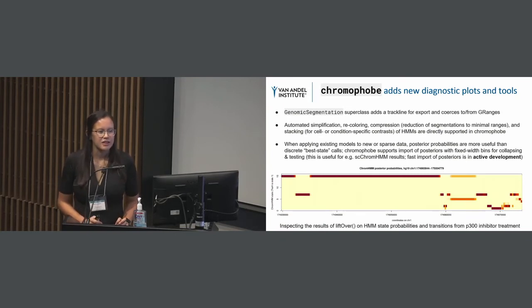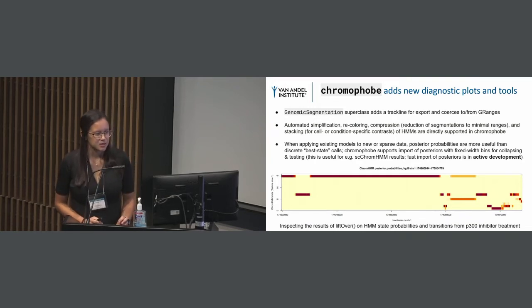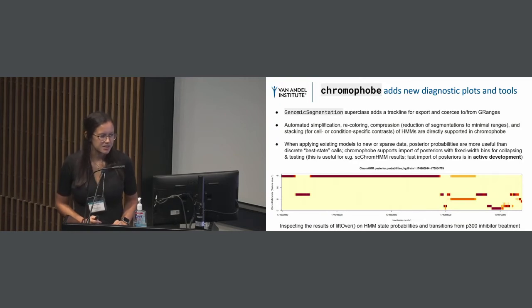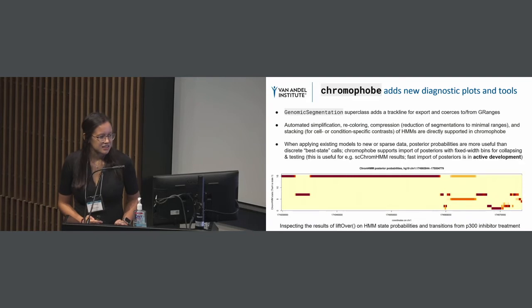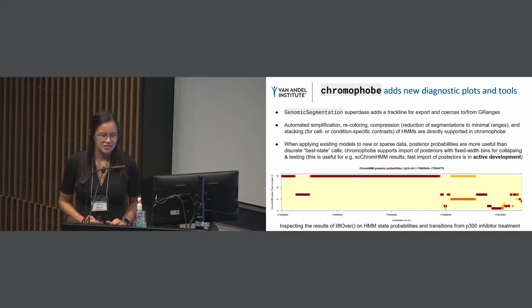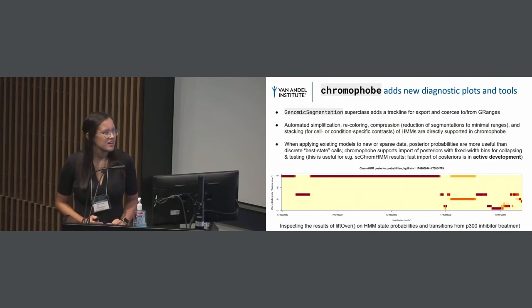Chromophobe is also useful for adding new diagnostic plots and providing tools for working with ChromHMM models. It uses genomic segmentation to add a track line for export, and converts to and from GRanges. It supports simplification, recoloring, and compression of HMMs. One feature we're very excited about is its ability to plot posterior probabilities — showing that in different regions of the genome, we have different amounts of confidence that a region is in a particular state. This is important for biological interpretation.